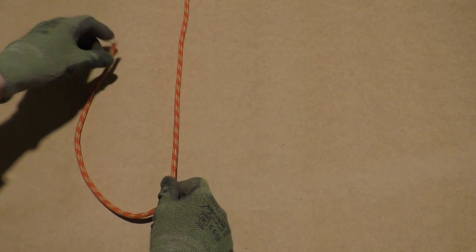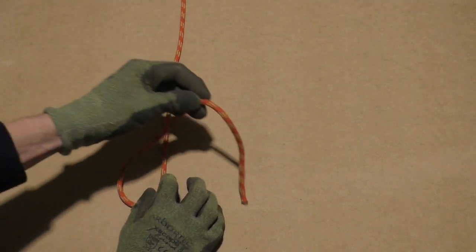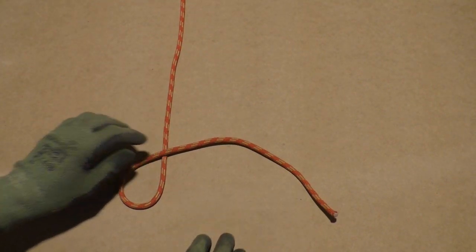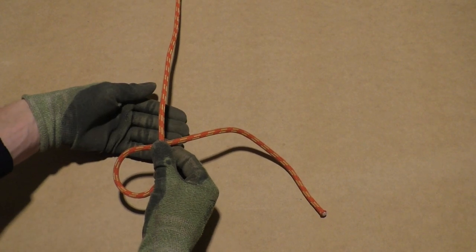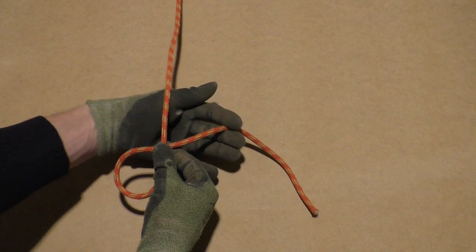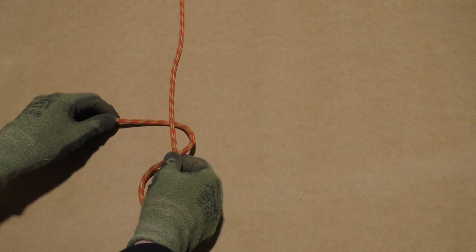Take the end of the line, this is called the working end, and bring it over the standing part to form a loop. Next we take the working end and go around the standing part. Now we form a so-called elbow.